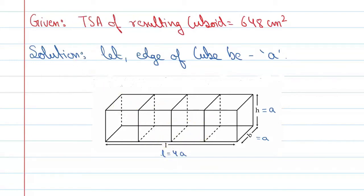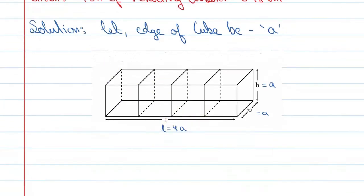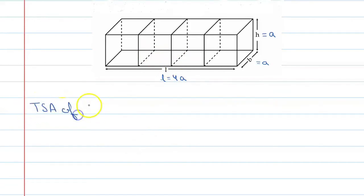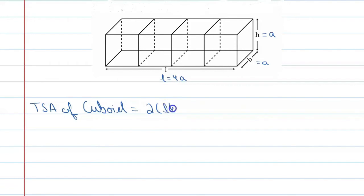Now according to the question, the total surface area of the cuboid is given as 648 cm². The formula for total surface area of a cuboid is 2(LB + BH + HL).